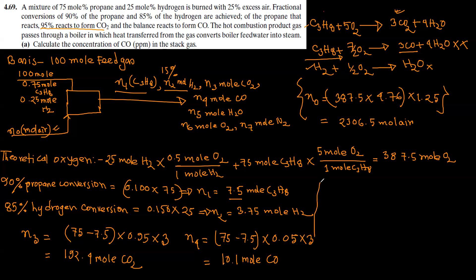Now to find n5, n6, n7 - I can solve n5 by hydrogen balance. If I do atomic species balance for hydrogen: 75 mol C3H8 in input times 8, plus 25 mol H2 times 2, equals 7.5 times 8 plus 3.75 times 2 plus n5 times 2. So n5 is 292 moles of water.